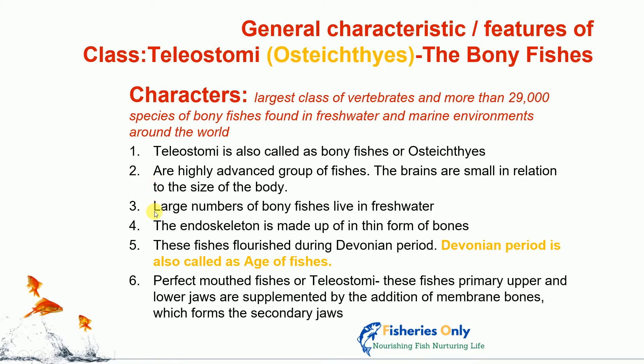Third character: a large number of bony fishes live in freshwater environments. It is sometimes called freshwater fishes, but that is not entirely true — they are also found in marine environments. Fourth character: the endoskeleton includes the skull, vertebral column, pectoral fin, and pelvic girdle arches, and it is made up of thin bony elements.